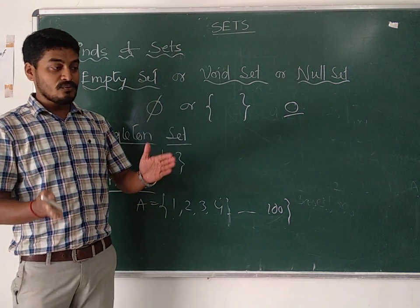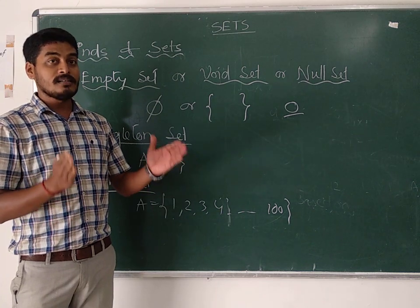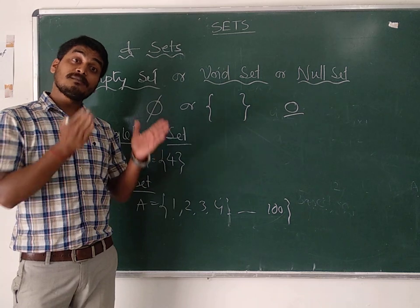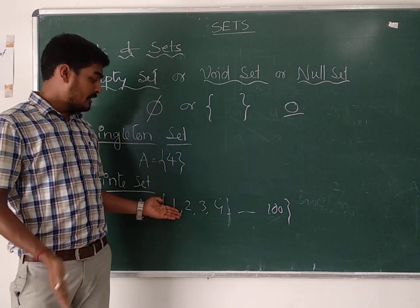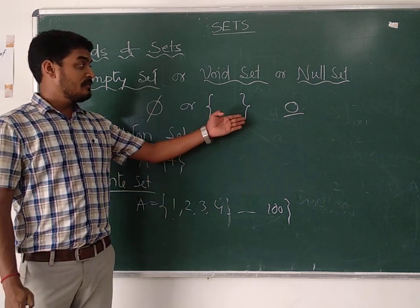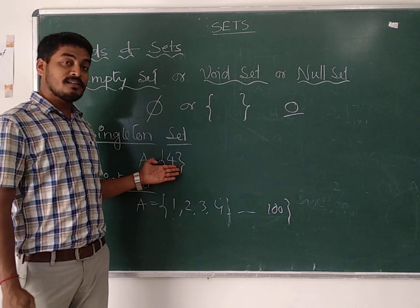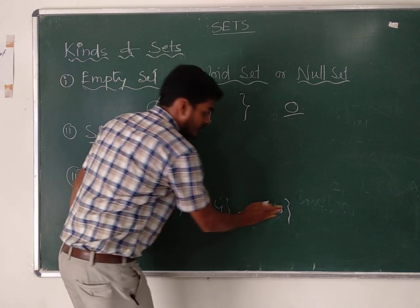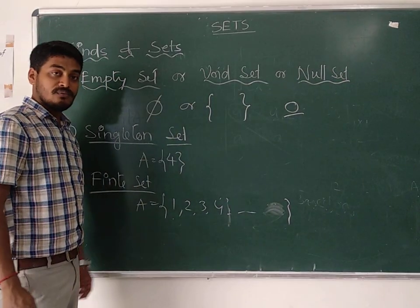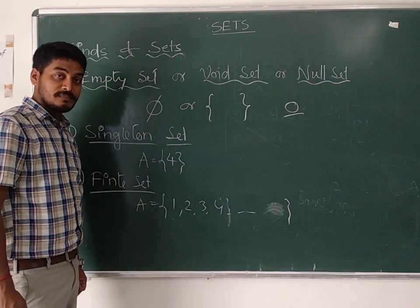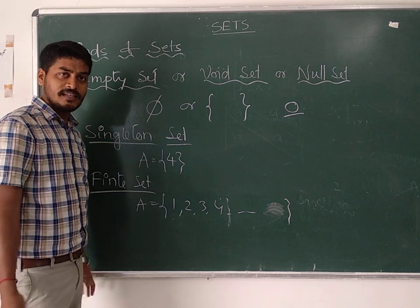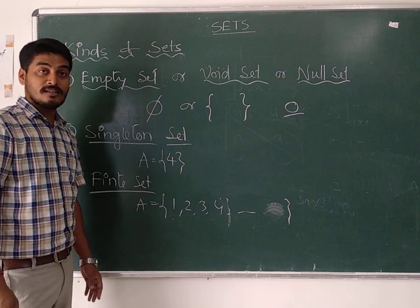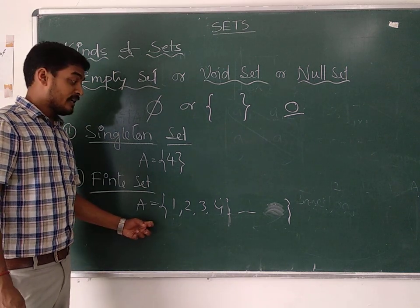Finite means you can represent the number of elements by a simple specific number. For example: how many elements? One hundred. How many elements? Zero. How many elements? Four. All of these are finite sets. But if you cannot represent the number of elements by any specific number — if you have no idea of the total count — then it is an infinite set.